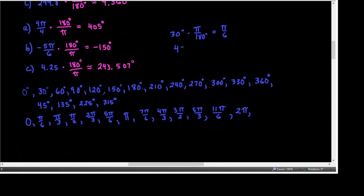For multiples of 45 degrees in radians, 45 degrees is pi over 4. So: pi over 4, 2 pi over 4 reduces to pi over 2 (already listed), 3 pi over 4, 4 pi over 4 reduces to pi (already listed), 5 pi over 4, 6 pi over 4 reduces to 3 pi over 2 (already listed), 7 pi over 4, and 8 pi over 4 reduces to 2 pi (already listed).